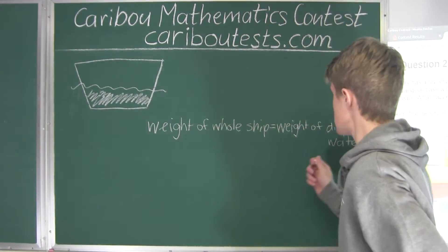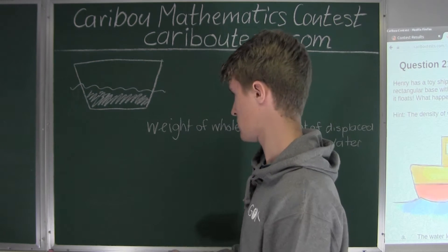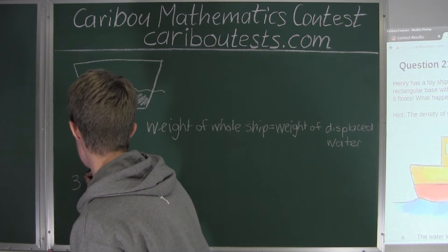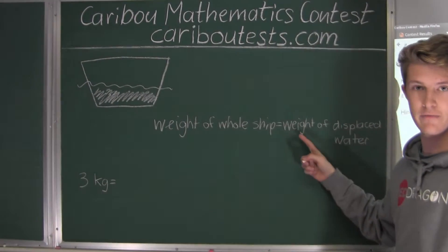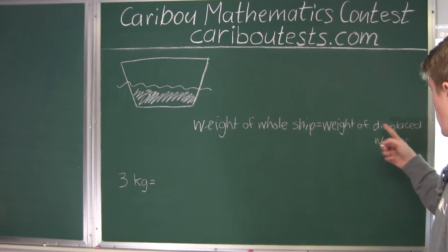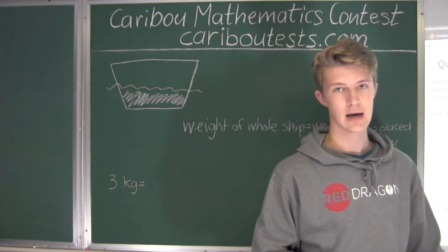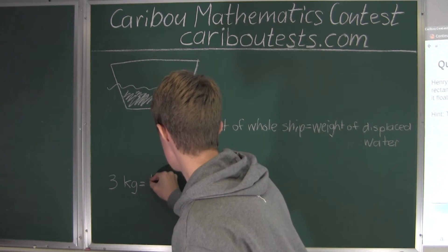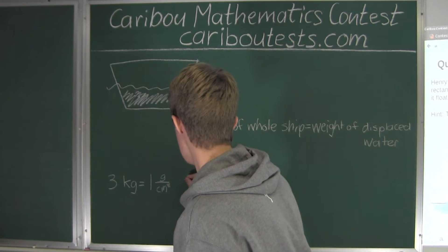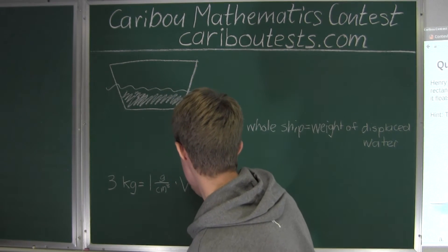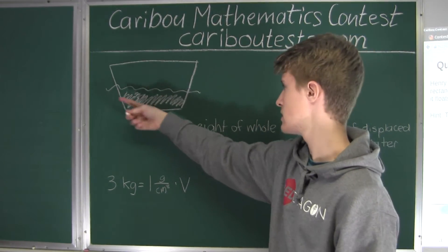So in our case, we know that the weight of the whole ship is given, and that toy ship weighs three kilograms. This is equal to the weight of the displaced water. The weight of the displaced water is the density of water, which is given in the hint as 1 g/cm³, and that is multiplied by the volume of this displaced water, which would be this right here.